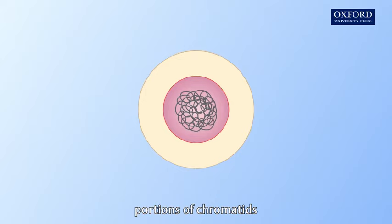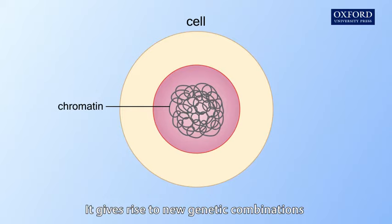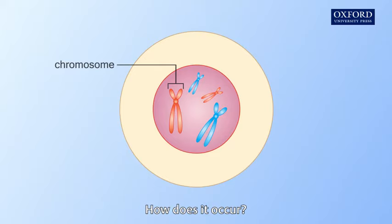Crossing over is an exchange of portions of chromatids between homologous chromosomes. It gives rise to new genetic combinations in the gametes. How does it occur?